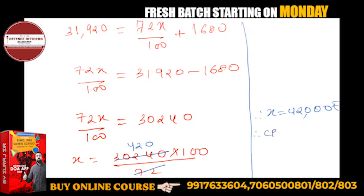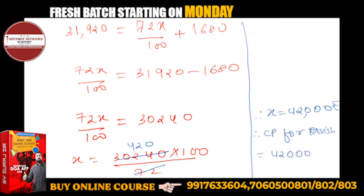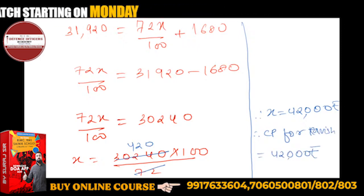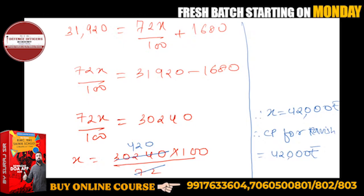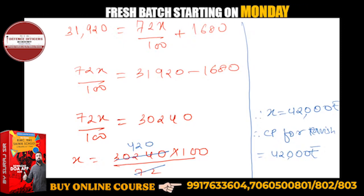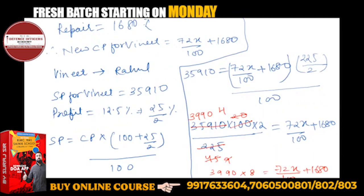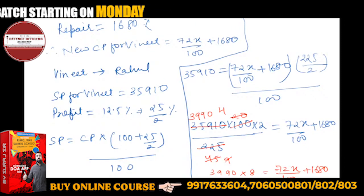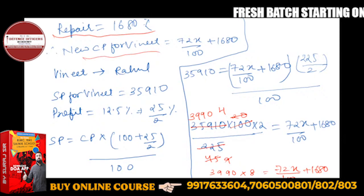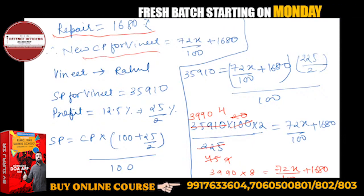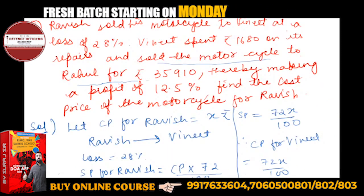Therefore, CP for Ravish is 42,000. I hope everyone has given the correct answer. So you have seen the way we used this, that SP is a function of CP. The thing you had to understand is that whatever money he spent on repair, Vineet spent, it adds to Vineet's CP. This you have to remember. A little calculation, very easy.